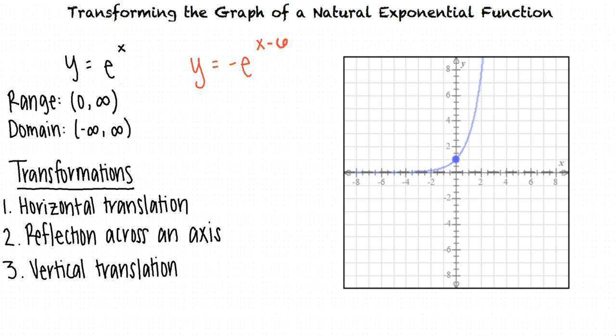Now we need to perform each transformation. Let's first see if we have any horizontal translations. Since we are subtracting a number next to x, that means we do, right? Right. The first step to obtaining our new function is subtracting 6 from x in the exponent. This corresponds to a horizontal translation of the original graph to the right 6 units.